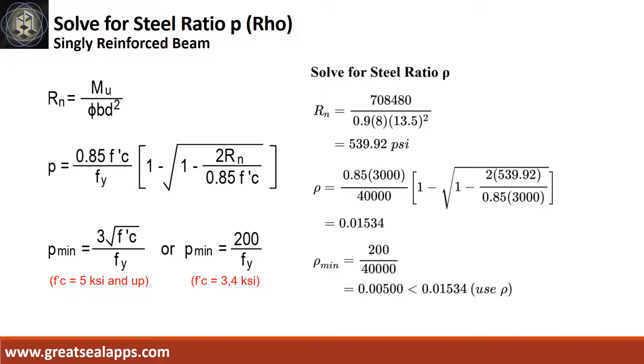Given Mu equals 708,480, resistance factor equals 0.9, B equals 8, and D equals 13.5, the beam design ratio Rn equals 539.92 psi, and reinforcement ratio ρ equals 0.01534.